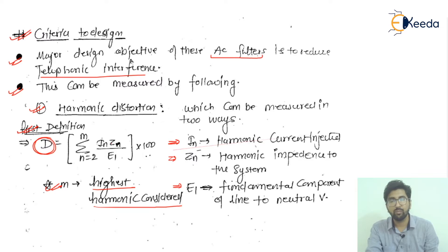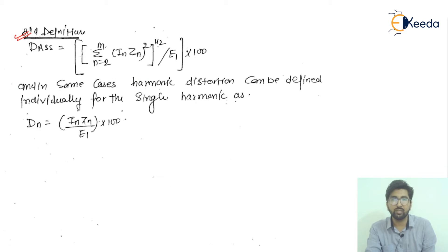The second definition is DRSS, which equals the square root of sigma from n=2 to M of (In × Zn)² divided by E1, multiplied by 100. In some cases, harmonic distortion can be defined individually for a single harmonic as Dn = In × Zn / E1. For the sixth or seventh harmonic, put n equal to 6 or 7 to find individual harmonic distortions.